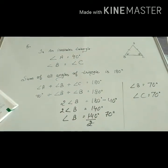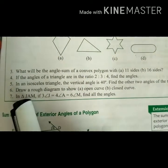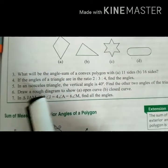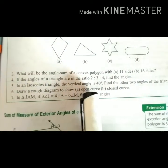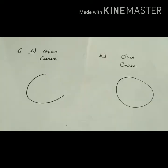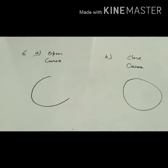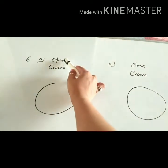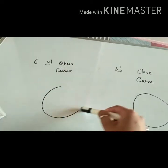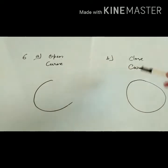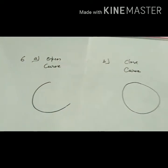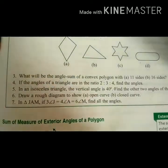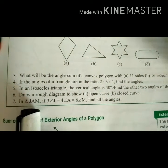Question number 6: Draw a rough diagram to show an open curve and a closed curve. We can draw any rough curve — for example, a half circle for an open curve and a full circle for a closed curve.